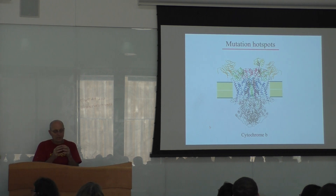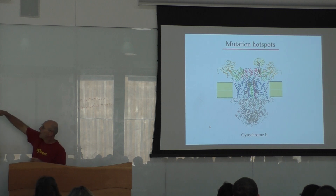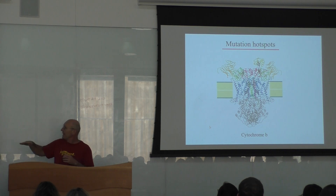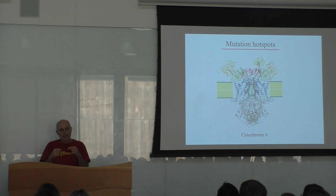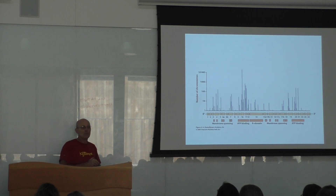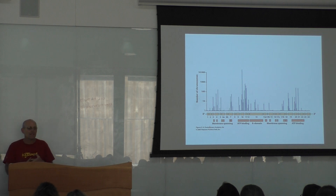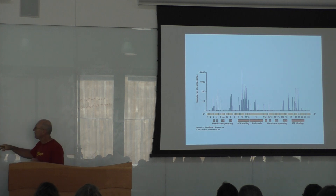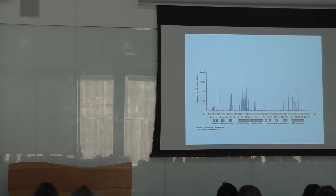The selective pressure of the three different regions of the protein is very different. When you are on the top and on the bottom, you can change some amino acids and the protein will still work. When you are inside the membrane, there is a very strong interaction between the membrane and the protein, and most changes will prevent the protein from sitting properly in the membrane, so the selective pressure is very strong. If you sequence many individuals' cytochrome b genes and plot where the mutations are, you will find hot spots of mutations — some regions have very few and others have a lot.